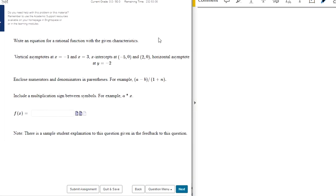We're asked to write an equation for a rational function with these given characteristics. Now a vertical asymptote happens when you have a divide by zero error.